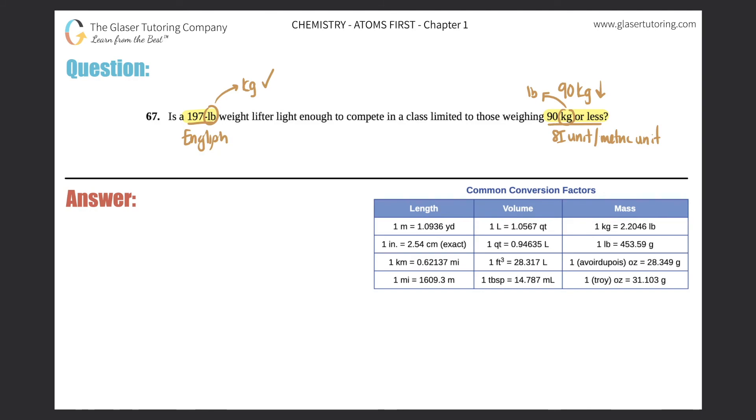So I want to convert 197 pounds, which is LB, and I want to see if I can convert it into kilograms because then I can compare them. So this would be technically my roadmap. Remember, whenever I like to convert things, I just like to write a roadmap. Makes things easier.